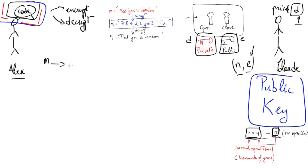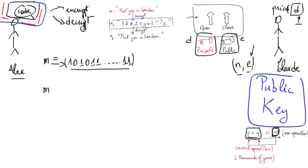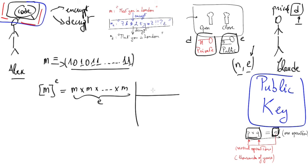When sending message M, Alex's computer associates a number with the message — for example, 'meet you in London' becomes a binary number like 10101011...etc. He wouldn't send this exact number to Claude because anyone intercepting it would understand the message. Instead, Alex takes M as a number, elevates it to the power of E — meaning he multiplies M by itself E times — then performs a Euclidean division by N.